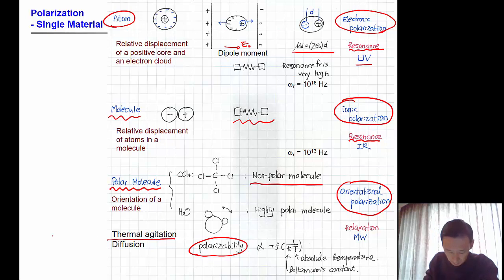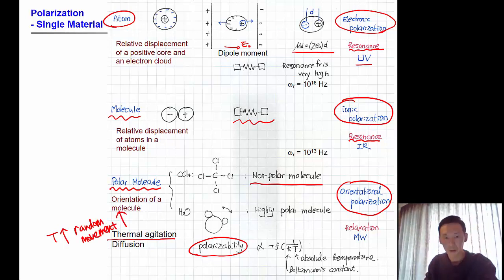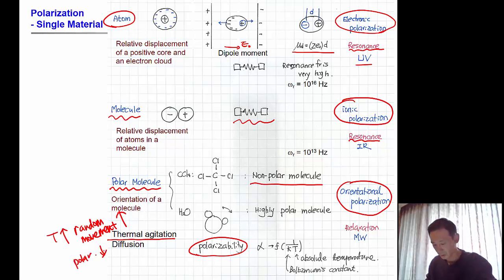As the temperature increases, the randomness and random movement tendency gets higher — the agitation level increases — so the polarizability decreases. Here, if alpha is the polarizability, it is inversely proportional to temperature.